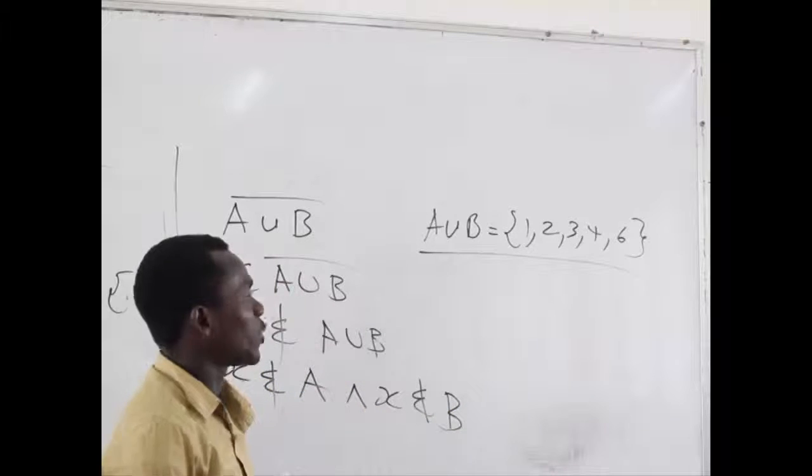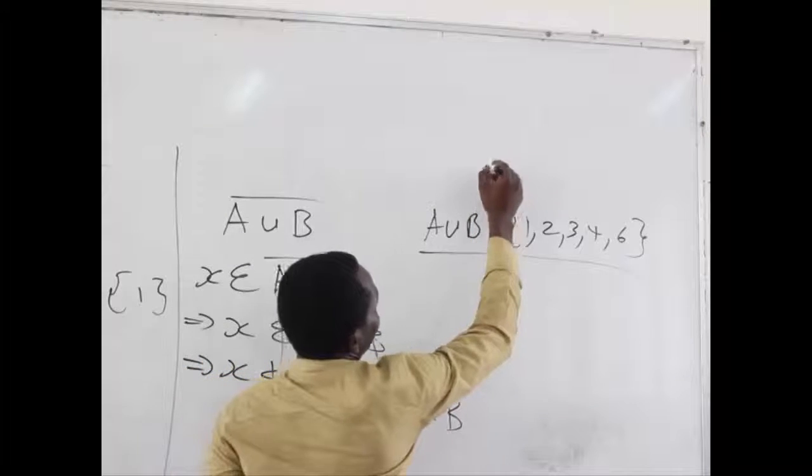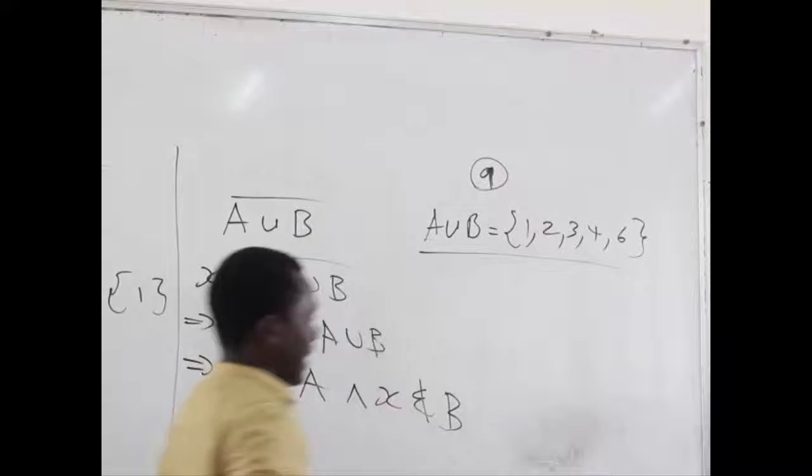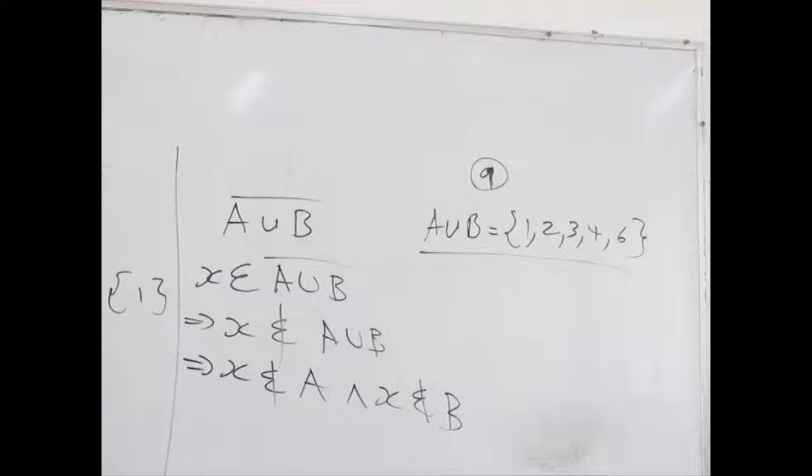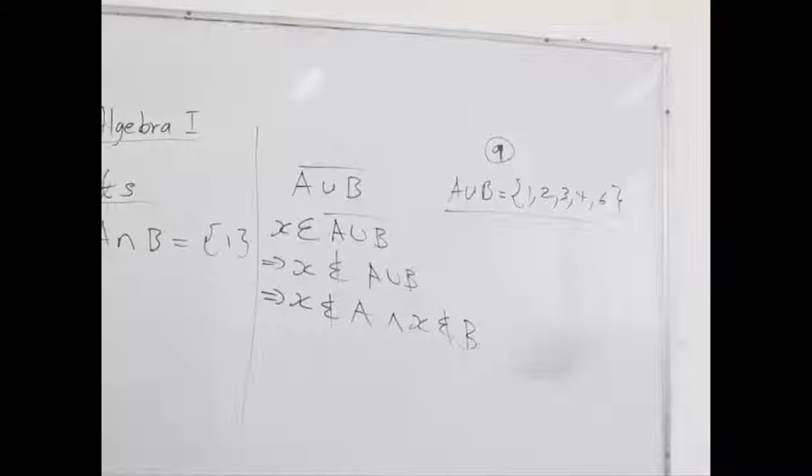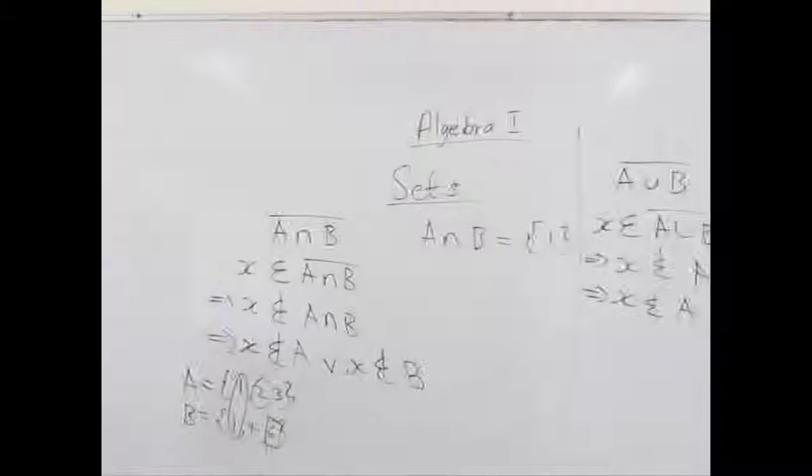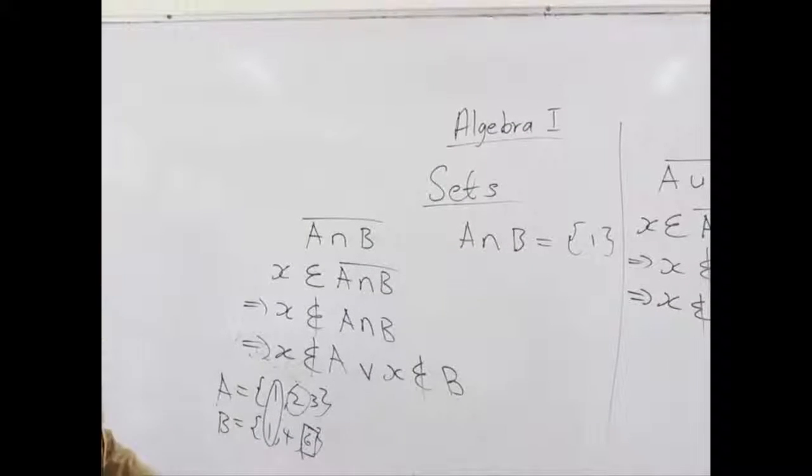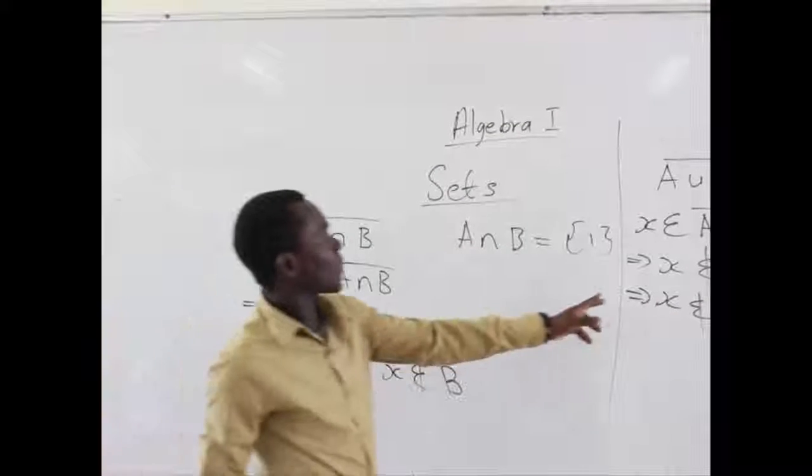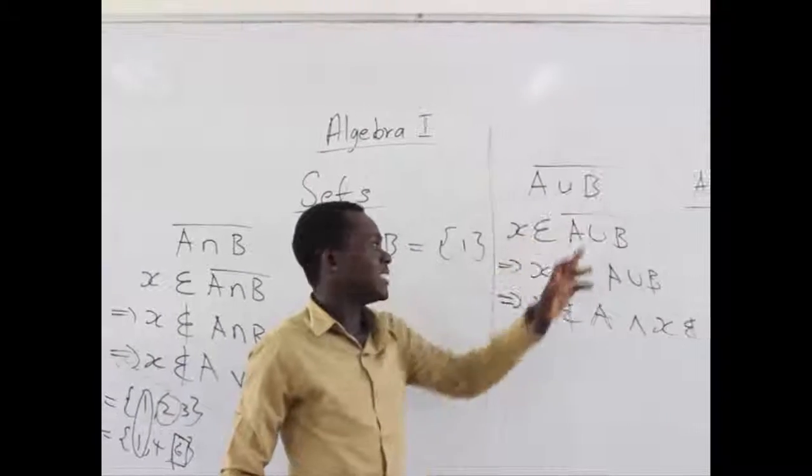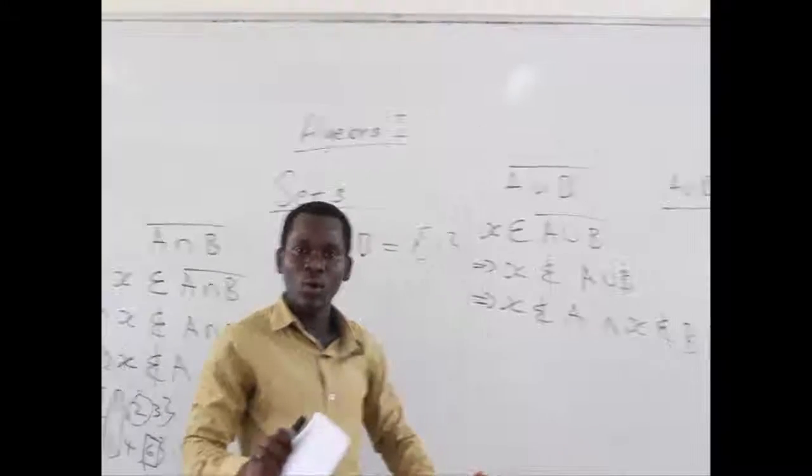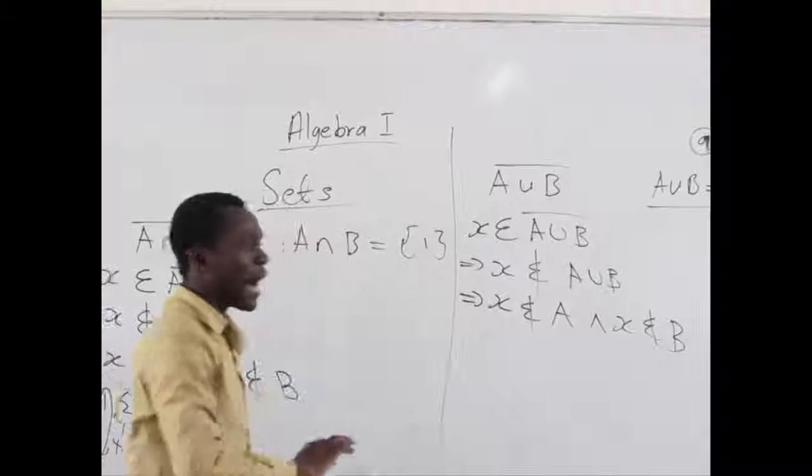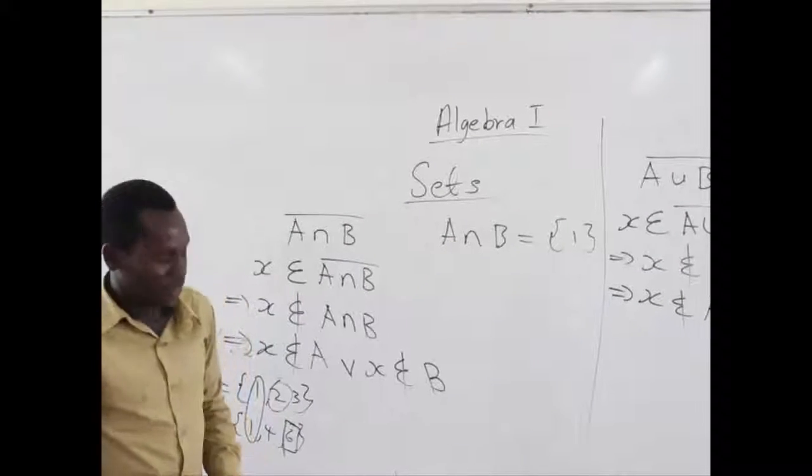So if any member does not belong to this set, assuming we are talking of the number 9, 9 cannot be found here. So since 9 cannot be found in A union B, you can see that 9 does not belong to A as well, doesn't belong to B as well. There is no 9 here, no 9 here. So when you belong to the set A union B complement, it means you neither belong to A or B, so you are out of the game as we talk.